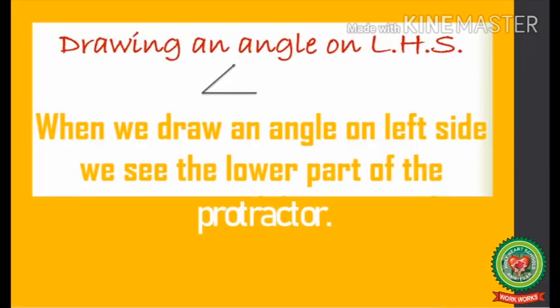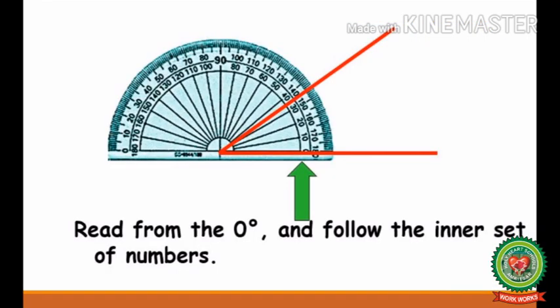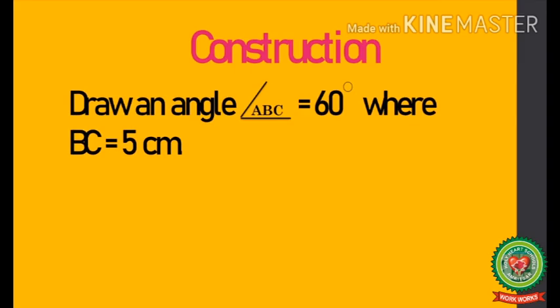Today we are going to learn how to draw an angle on the left hand side, that is LHS. When we draw an angle on the left side, we see the lower part of the protractor. To draw an angle on the left hand side, read from zero degree and follow the lower part or inner set of numbers. Let's take one example.